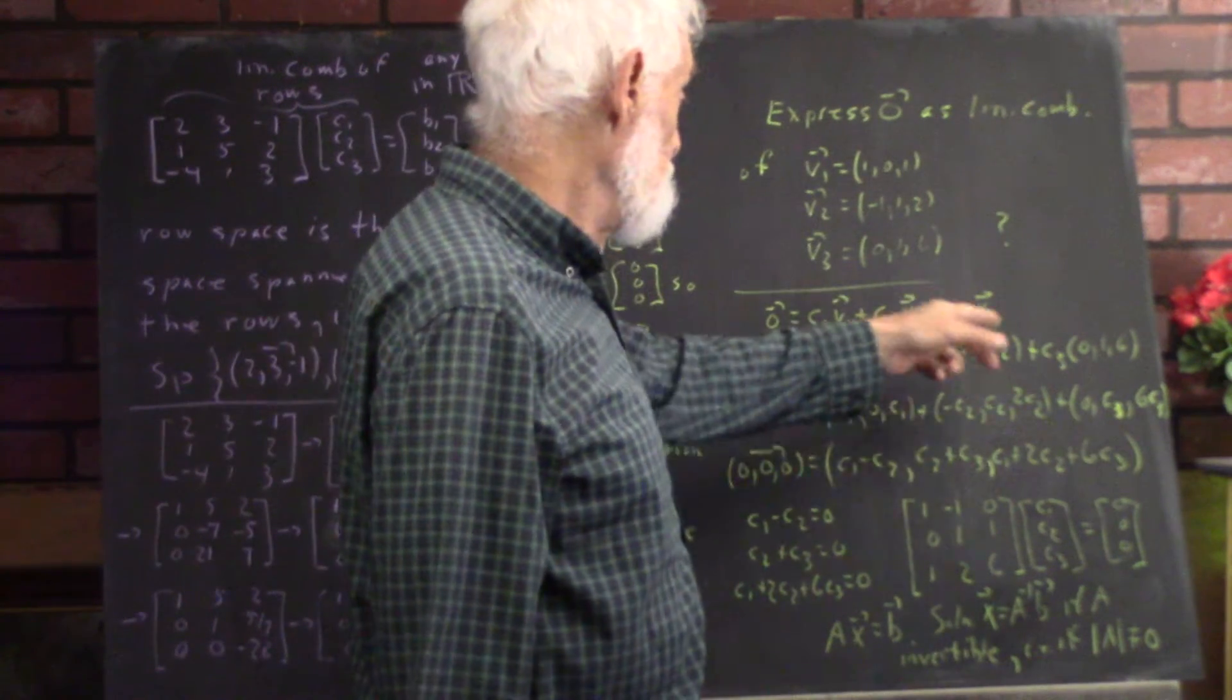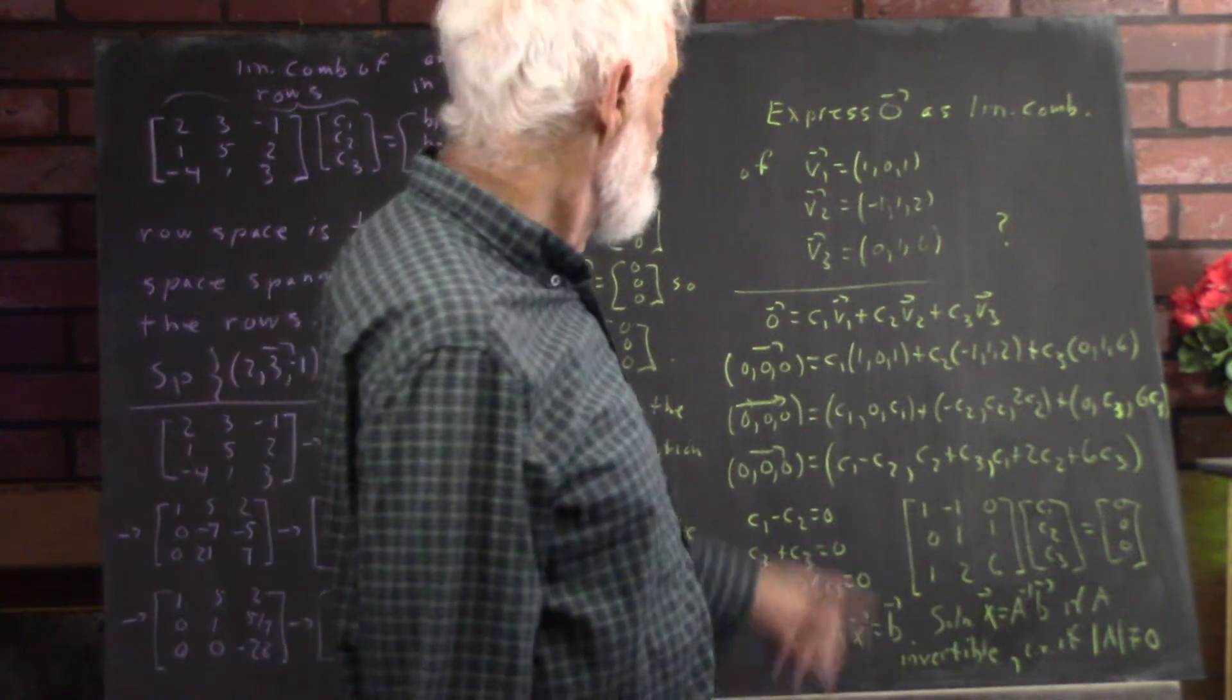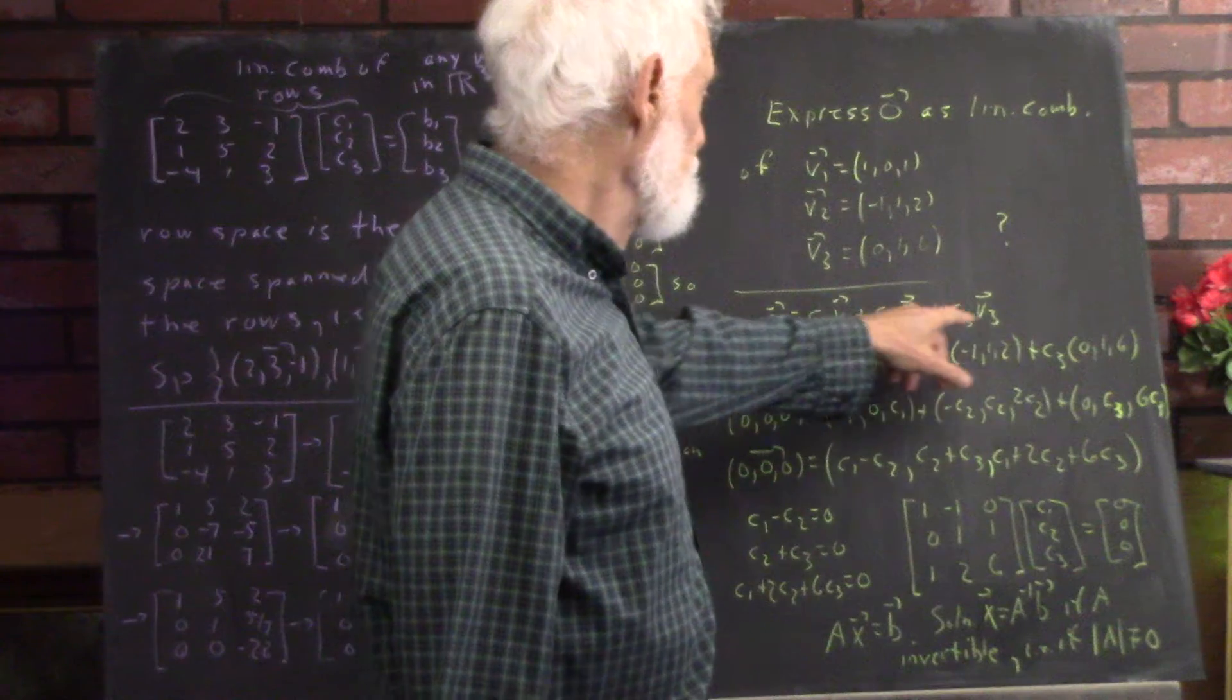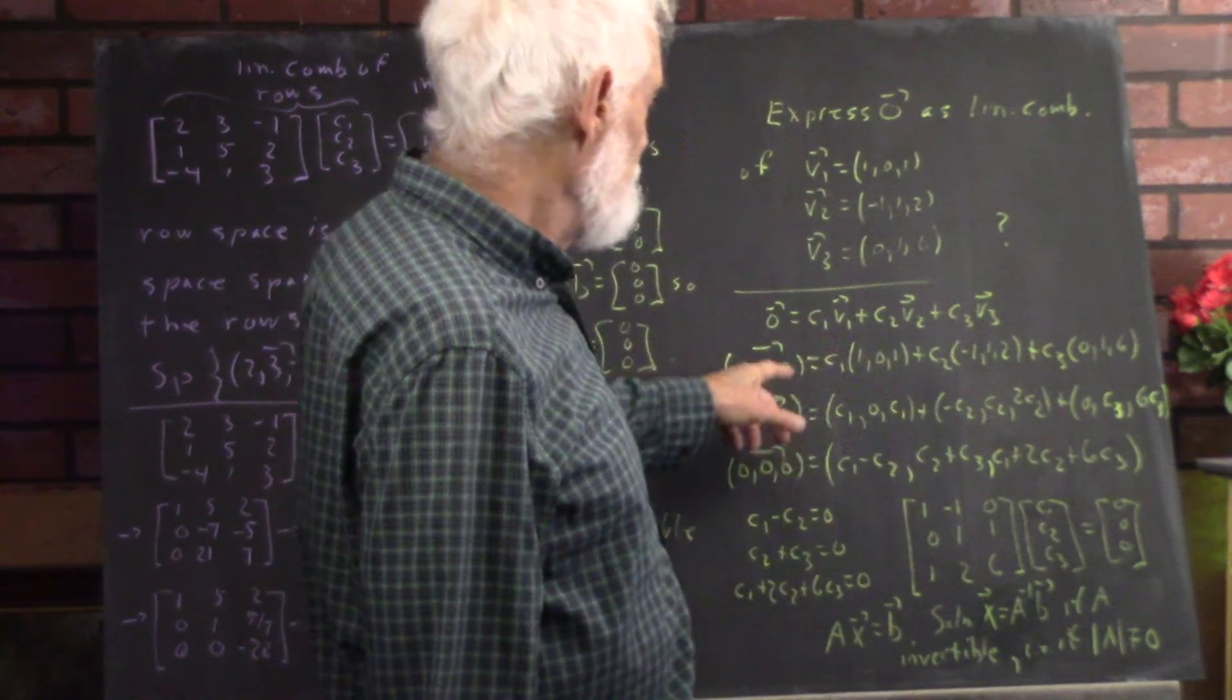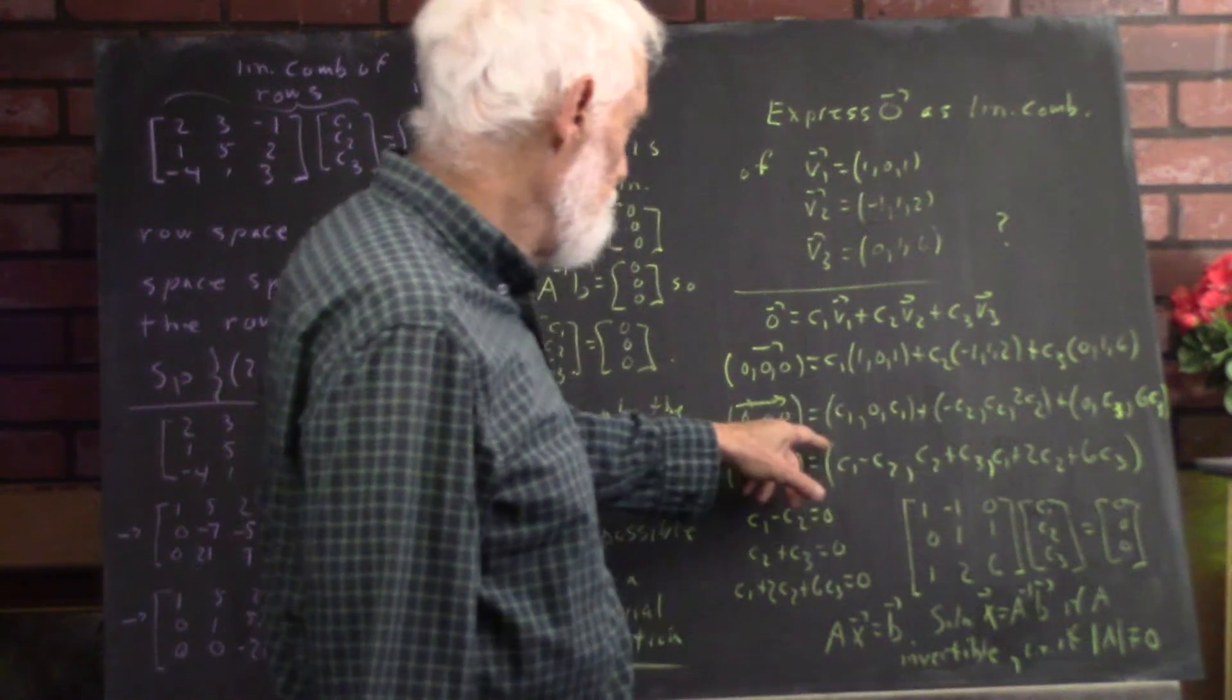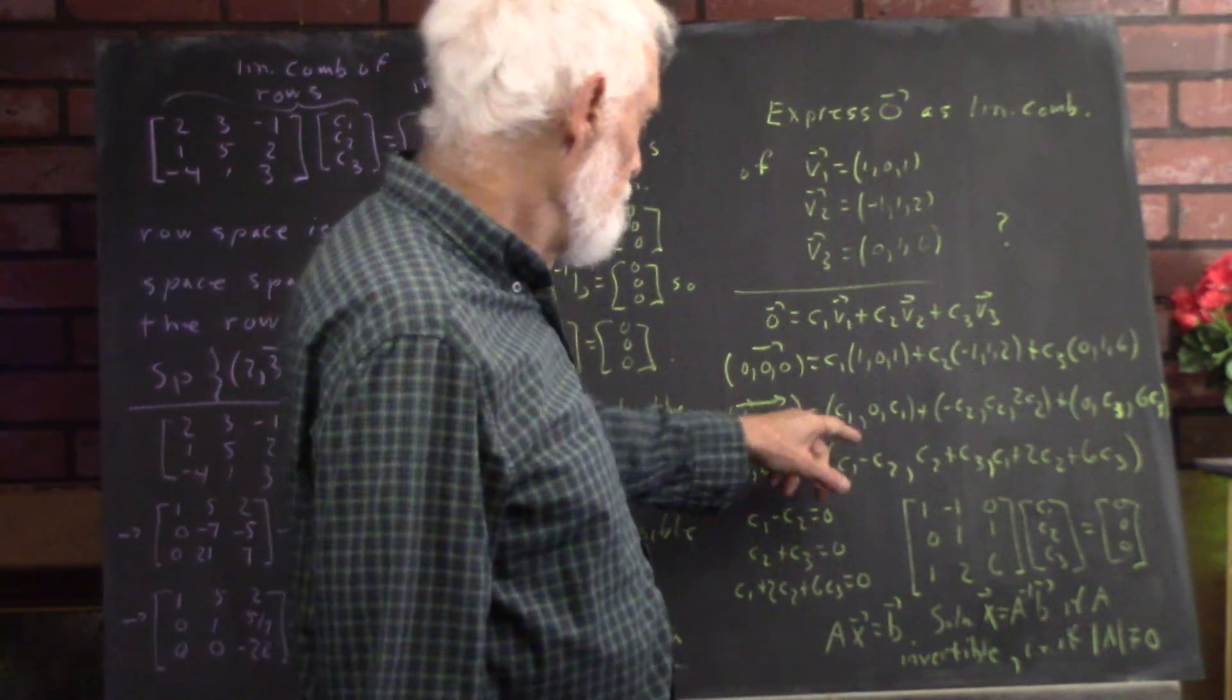We set the zero vector equal to a linear combination of the three vectors and we see if we can solve for C1, C2, and C3. Writing out the coordinates of the V1, V2, V3 vectors and then multiplying through by C1, C2, C3, we get this equation.